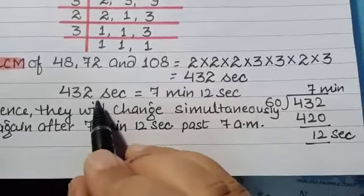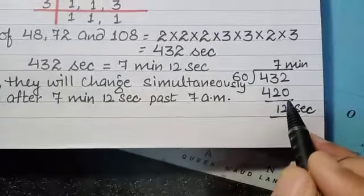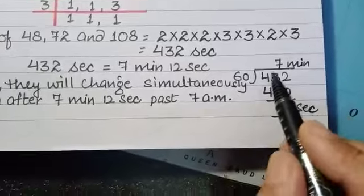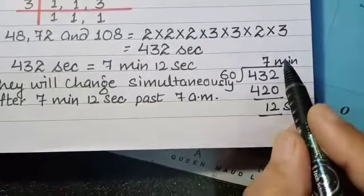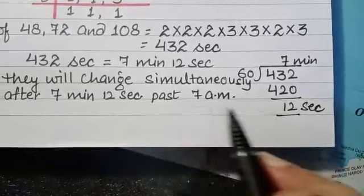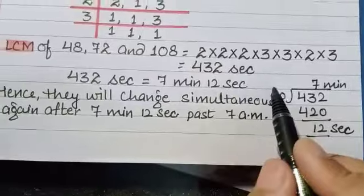Now we will convert 432 seconds into minutes by dividing it with 60. 60 into 7 is 420, remainder is 12. So 7 minutes and 12 seconds. 432 seconds is equal to 7 minutes 12 seconds.